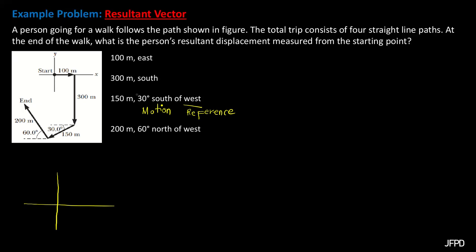Let's now draw all the given vectors. The 100 meters to the east is a vector located on the positive x-axis. The 300 meters to the south is located on the negative y-axis. The 150 meters is located in quadrant 3, creating an angle of 30 degrees below the negative x-axis.